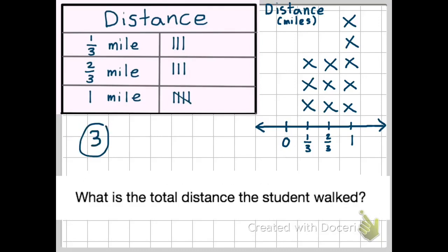Number three, and this one's the one that's going to take you a little bit of time, but there is no number four, so this is going to count as two problems, and then you'll be done. The question is, what is the total distance the student walked? So you're going to have to figure out each of those parts, add them all together, and then write down your answer.